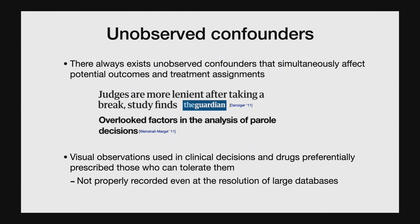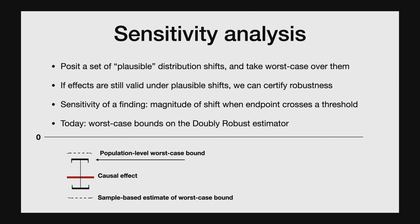This is a very prominent problem in medicine, where doctors base treatment decisions on visual observations and conversations with patients, but these observations are not properly recorded in electronic medical records at the resolution of current systems. Drugs are also preferentially prescribed to people who can tolerate their side effects and for whom they'll be most effective. Despite these violations, we still want our causal findings and resulting decisions to be robust. Today I'll talk about a distributionally robust approach: we posit a set of plausible violations and take the worst-case causal effect.